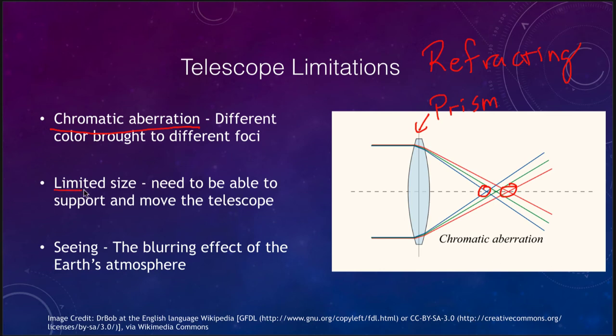There is also a size limitation that particularly affects refracting telescopes. It's easier to build much bigger reflecting telescopes because in a refracting telescope you can only support the lens around the edges — you can't support it from behind without blocking the light path. With a mirror, you can support it from behind, which is why we're able to build much larger reflecting telescopes than refracting ones.